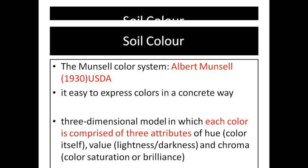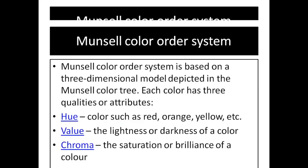The Munsell color order system is based on a three-dimensional model with three components: hue, value, and chroma. Hue represents the color. Value represents the brightness and darkness. Chroma represents the strength or paleness of the color.